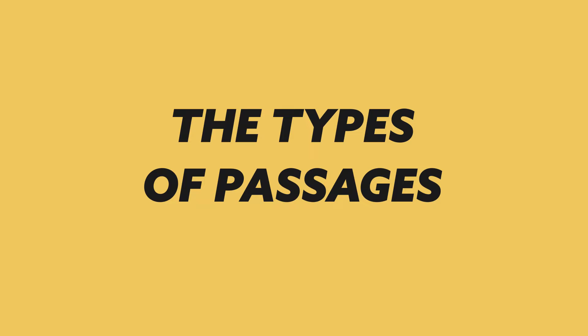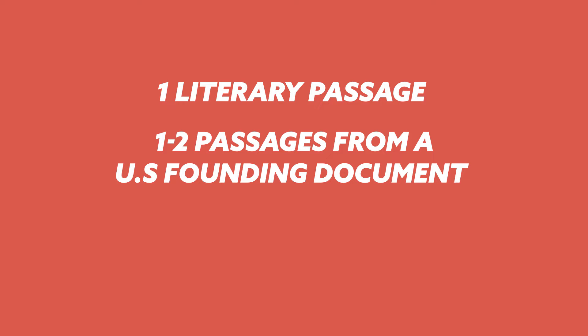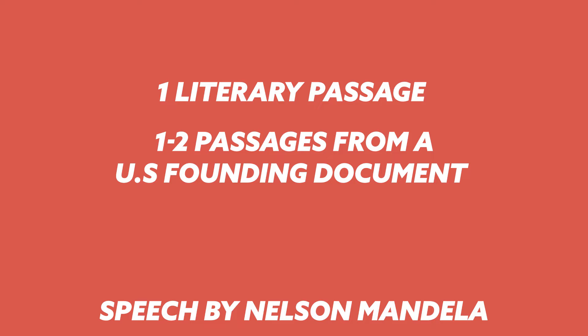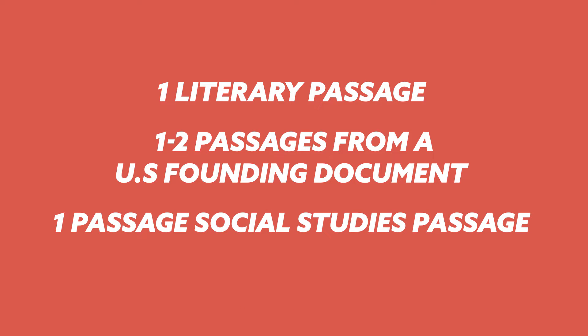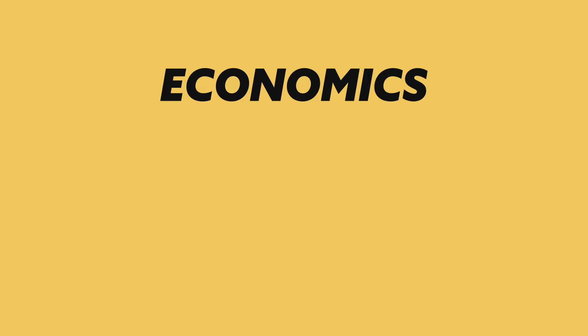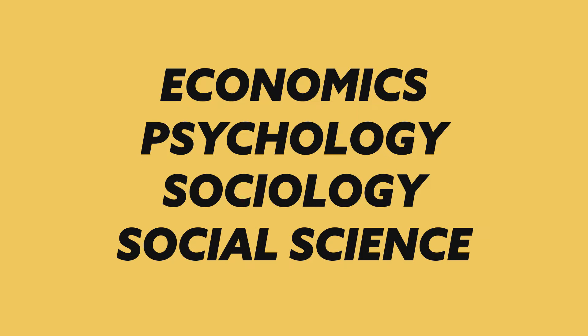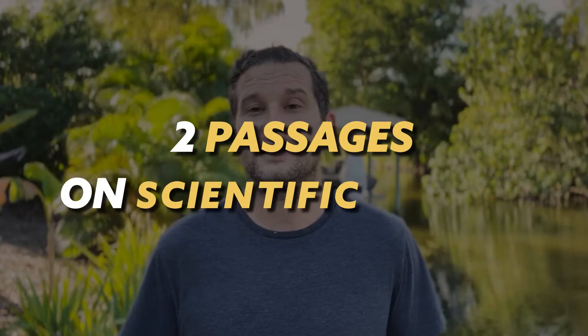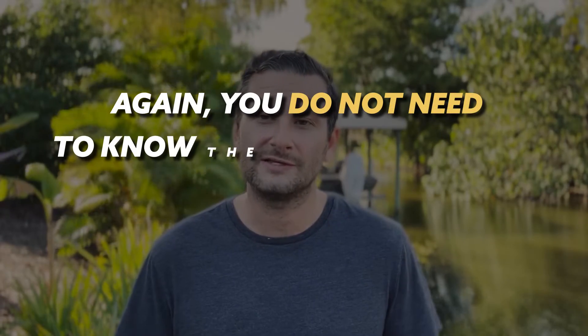The types of passages you can expect to see: you'll have one literary passage from a work of fiction, one or two passages from a U.S. founding document or text — examples could be the U.S. Constitution or a speech by Nelson Mandela. You'll also have one passage from economics, psychology, sociology, or some other social science. Then two passages from scientific works examining foundational concepts like developments in earth science, biology, chemistry, or physics. You don't need to know these subjects — everything you need will be in those passages.